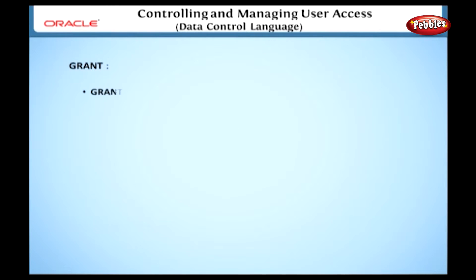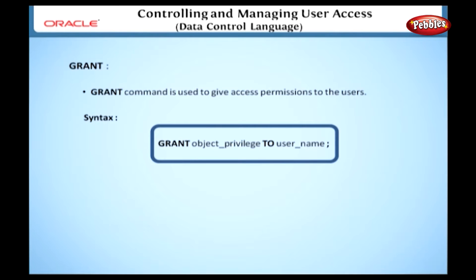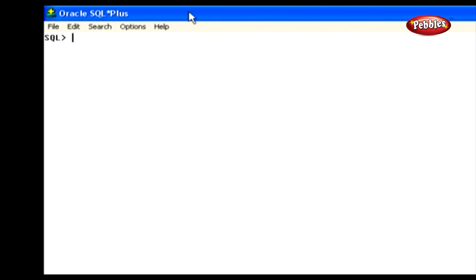Here we will see in detail how to give object privileges to the user. In Oracle, every table is considered an object. Now we will see in detail about the grant command. The grant command is used to give access permissions to the users. The syntax is: GRANT object_privilege TO username. Here, GRANT is a keyword to specify the grant operation. In object privilege, we can give any of these: Select, Insert, Update, Delete. Username specifies the name of the user for whom we are going to give permissions.